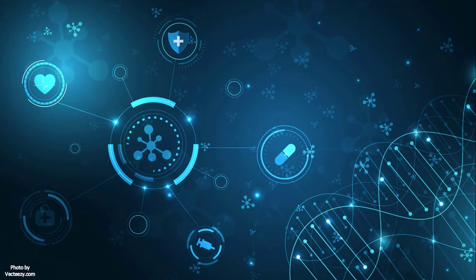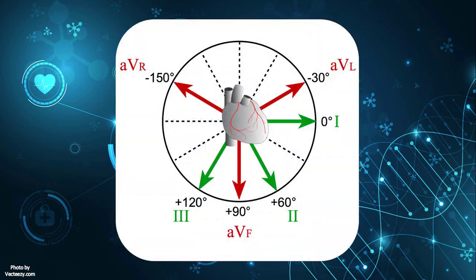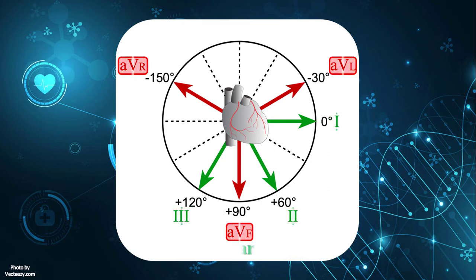Before getting into the heart of the matter, we must get familiar with the exact location of all six limb leads in the frontal plane. The present diagram illustrates the anatomic location of limb leads. Leads 1, 2, and 3 are bipolar leads, while leads AVR, AVL, and AVF are augmented unipolar leads.